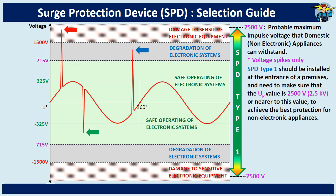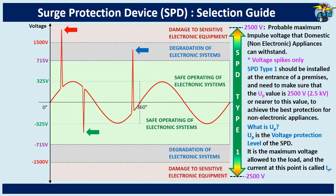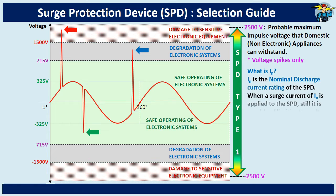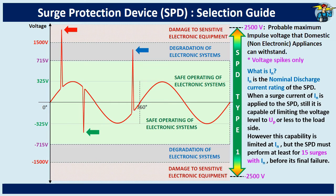So, what is UP? UP is the voltage protection level of the SPD. It is the maximum voltage allowed to the load, and the current at this point is called IN. IN is the nominal discharge current rating of the SPD. When a surge current of IN is applied to the SPD, it is still capable of limiting the voltage level to UP or less on the load side. However, this capability is limited at IN. The SPD must perform for at least 15 surges with IN before its ultimate end of life.